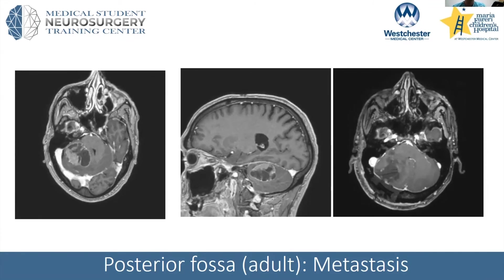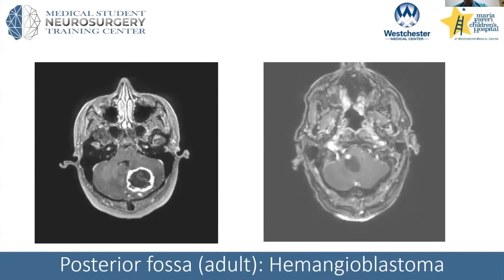Now we're going to look at the posterior fossa. The differential diagnosis varies based on the age of the patient. For adults, by far the most common lesion is metastatic — really the top of your differential for anyone who comes in as an adult with a posterior fossa lesion. This was a gentleman, a heavy smoker in his 50s, who came in with balance issues. With compression of the fourth ventricle he had developed hydrocephalus and incoordination. This patient had a resection, showing that metastasis is really the top of the differential for adults.